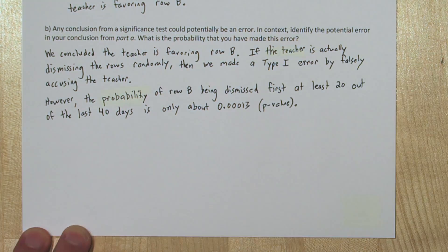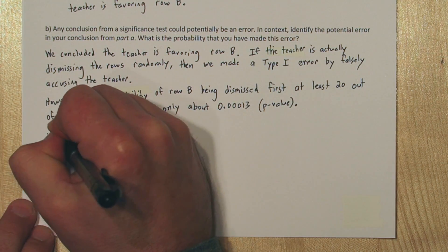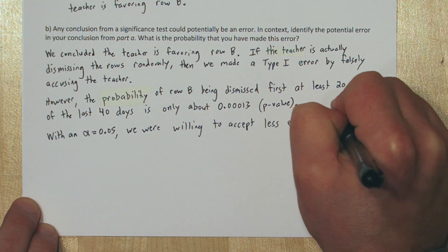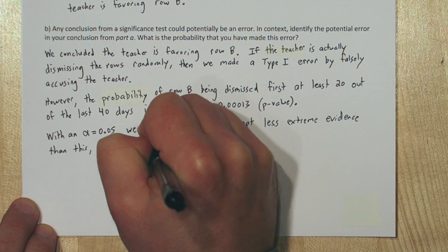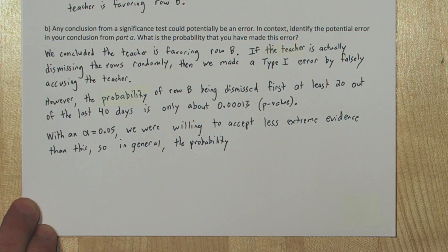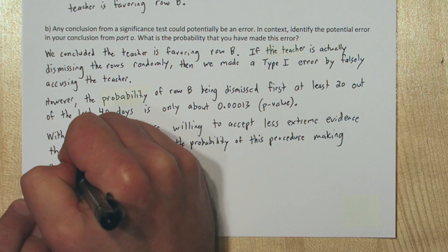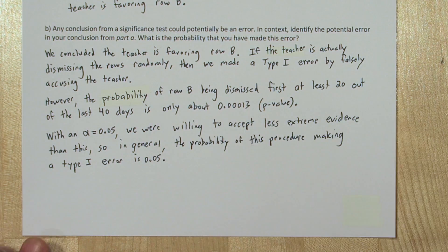So it seems unlikely we made an error. But with an alpha of 0.05, we were willing to accept less extreme evidence than this. So in general, the probability of this procedure making a type 1 error and us falsely accusing the teacher is 5%, our alpha value.